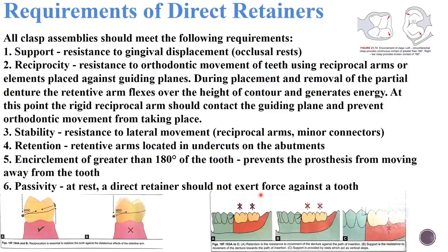In summary: retention is resistance to movement of the denture against the path of insertion; support is resistance to movement towards the path of insertion, provided by the rest; and reciprocation is essential to stabilize the tooth against the deleterious effects of the retentive arm. These are the requirements of the direct retainer.